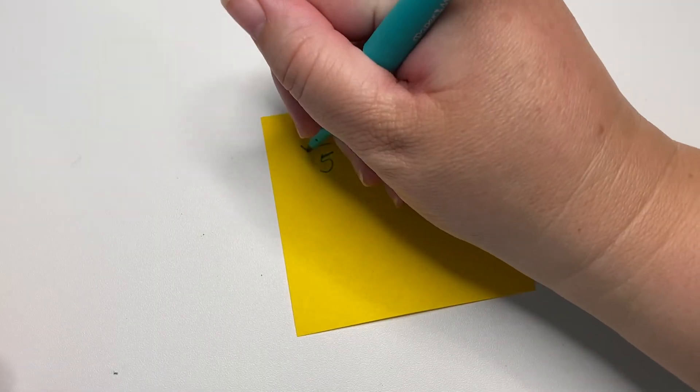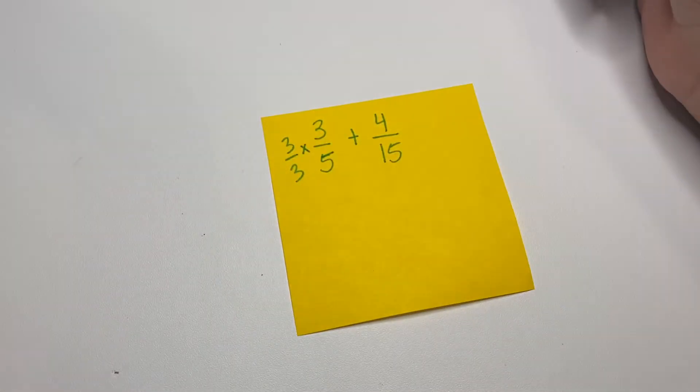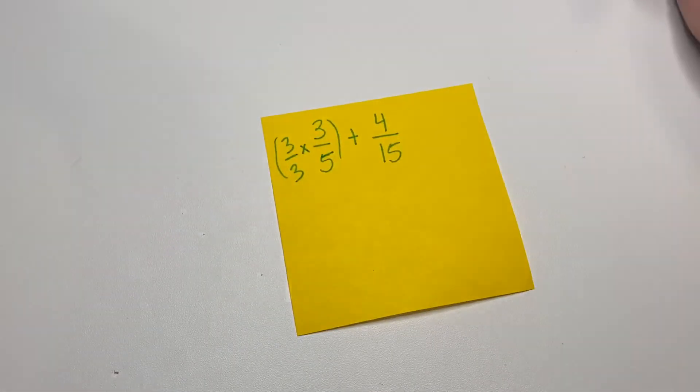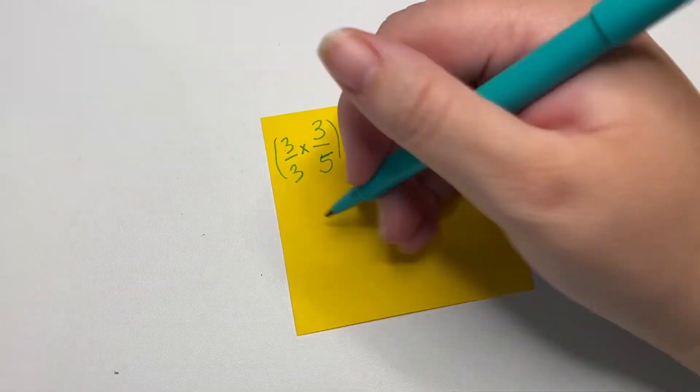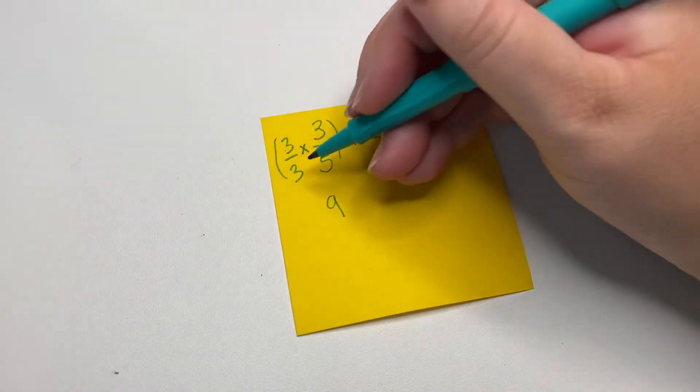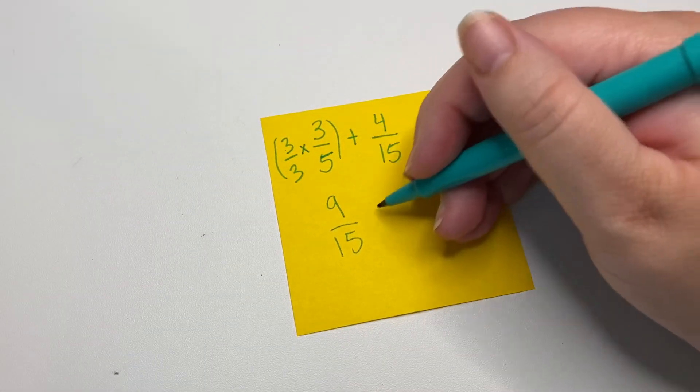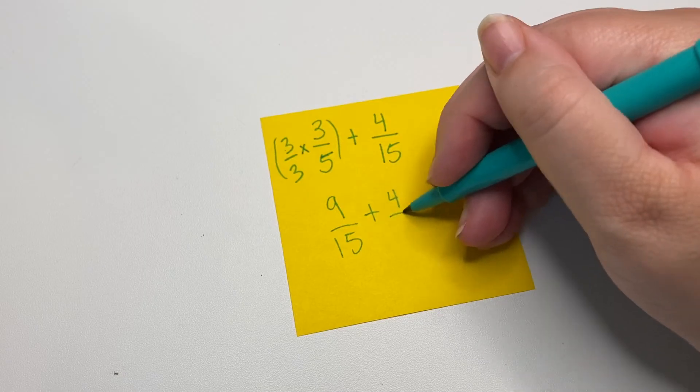So we're going to multiply this whole fraction times 1, but the version of 1 that's 3 over 3. So 3 times 3 is 9, and 3 times 5 is 15.